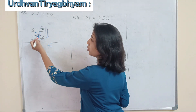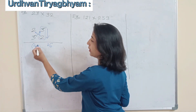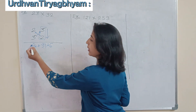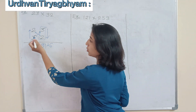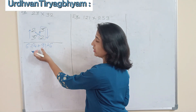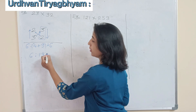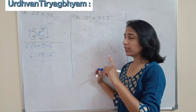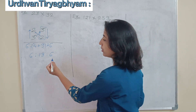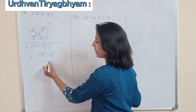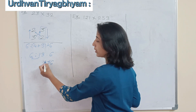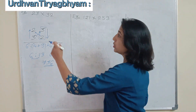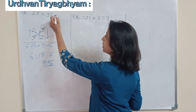In the cross step: 2 into 2 is 4, plus 3 into 3 is 9, so the cross product gives 13. Then the last step is again vertical: 2 into 3 is 6. Now simplify — the middle number is 13, so we write 3 and carry 1, giving us 7. So the product of 23 and 32 is 736.